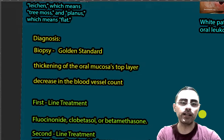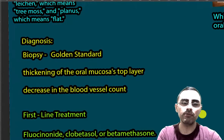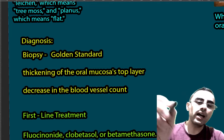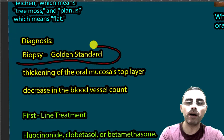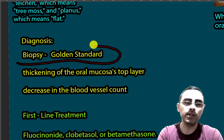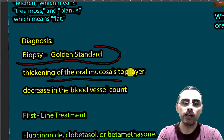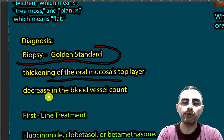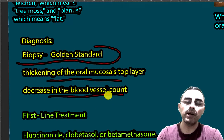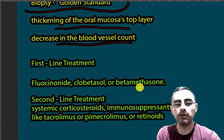Regarding diagnosis, appearance and symptoms can serve as diagnostic criteria, but the gold standard of diagnosis is biopsy. In biopsy we can see thickening of the top layers of the oral mucosa, decreased blood vessel count, and increased band of lymphocytes — that is, lymphocyte accumulation.